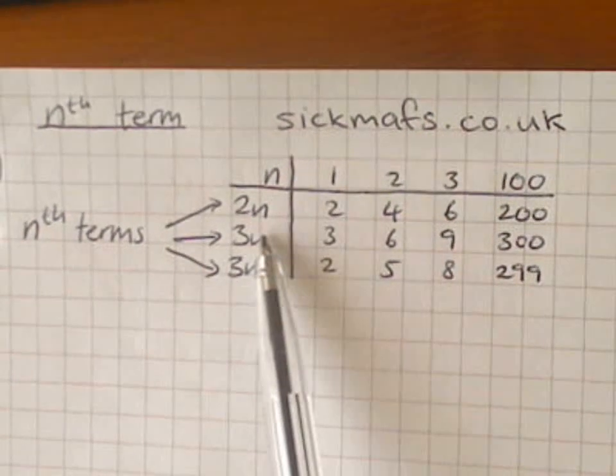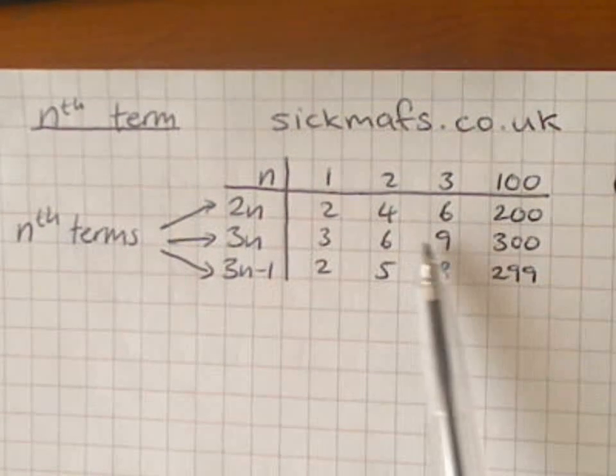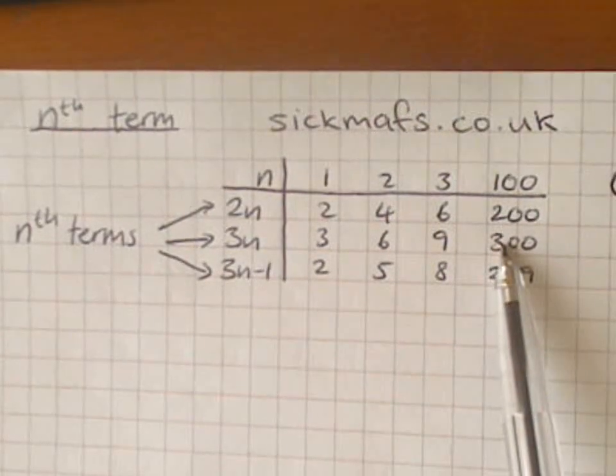And the same with 3n. 3n gives you the three times table. And the hundredth number is three hundred.